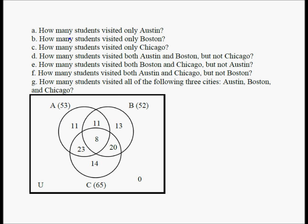Answering all questions: only Austin = 11; only Boston = 13; only Chicago = 14; Austin and Boston but not Chicago = 11; Boston and Chicago but not Austin = 20; Austin and Chicago but not Boston = 23; all three cities (Austin, Boston, and Chicago) = 8. All questions have been answered.